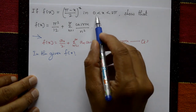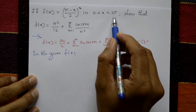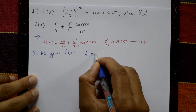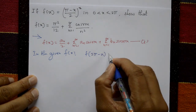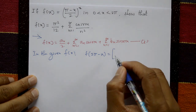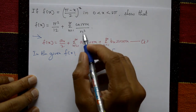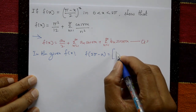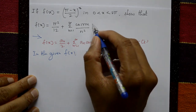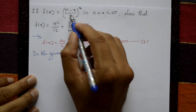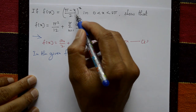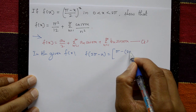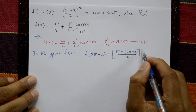Now put x equal to 2π minus x. Since the limit is 0 to 2π, f(2π minus x) equals (π minus (2π minus x)) divided by 2, whole square. Opening the bracket: (π minus 2π plus x) divided by 2, which simplifies to (x minus π) divided by 2, whole square.